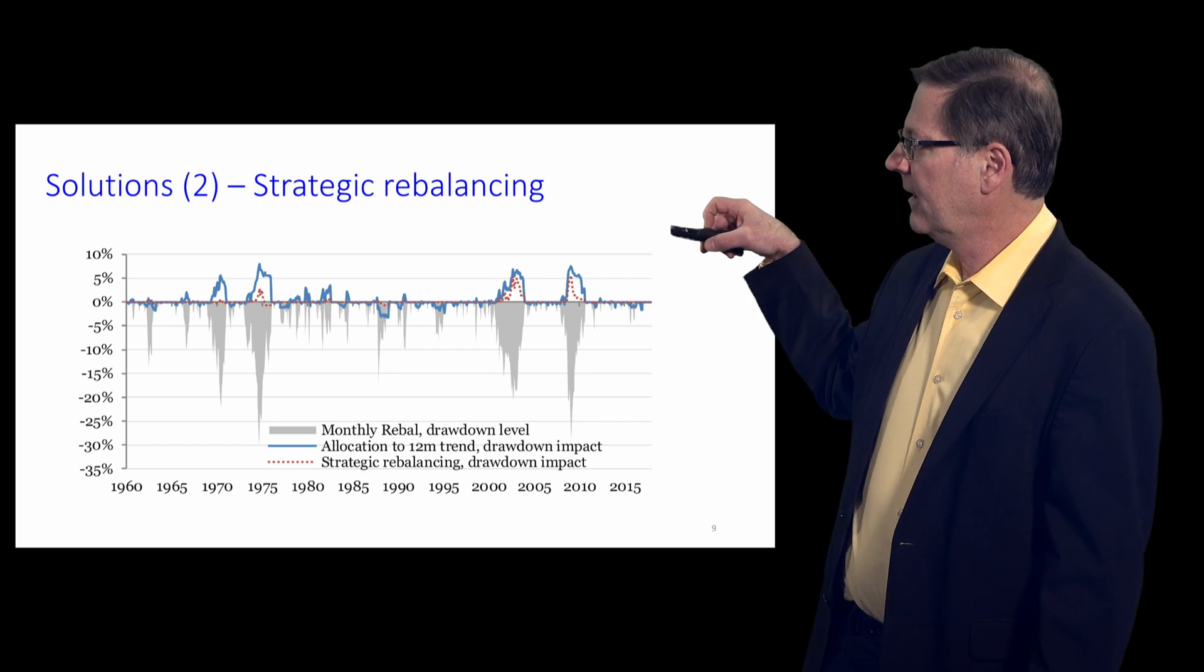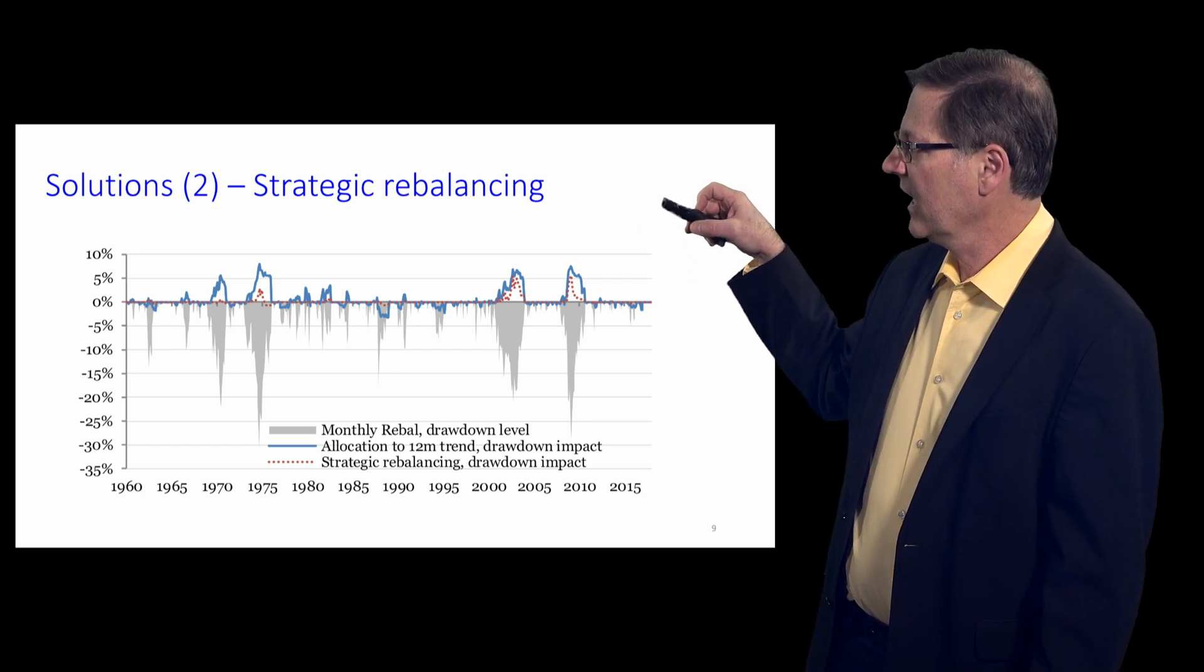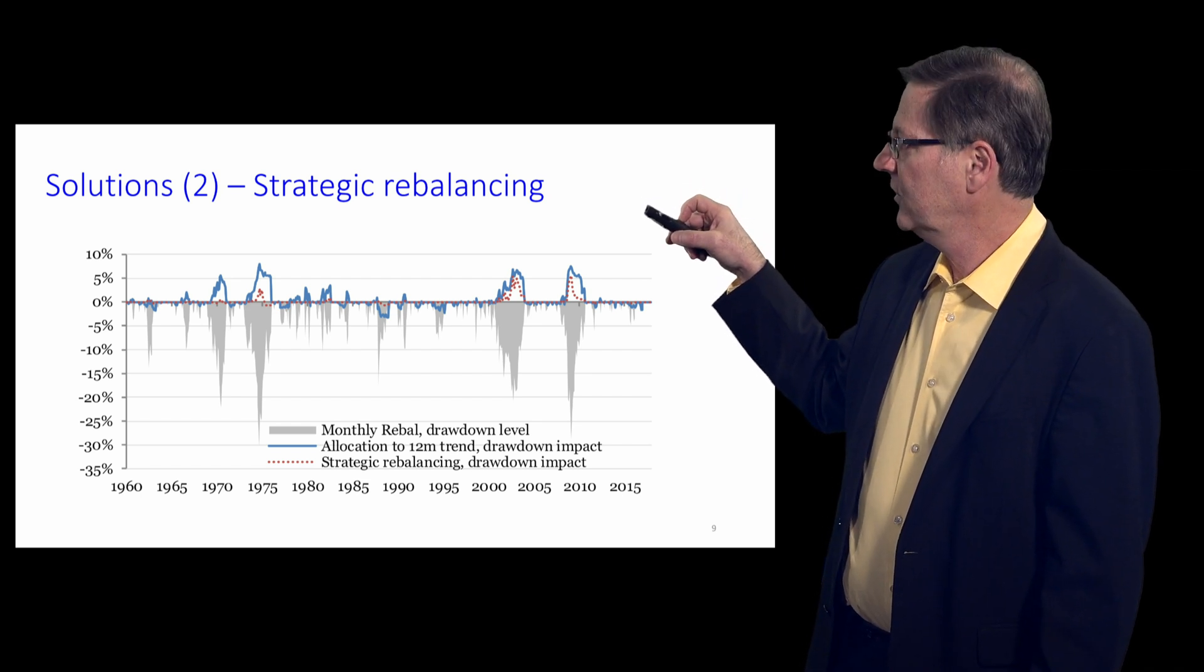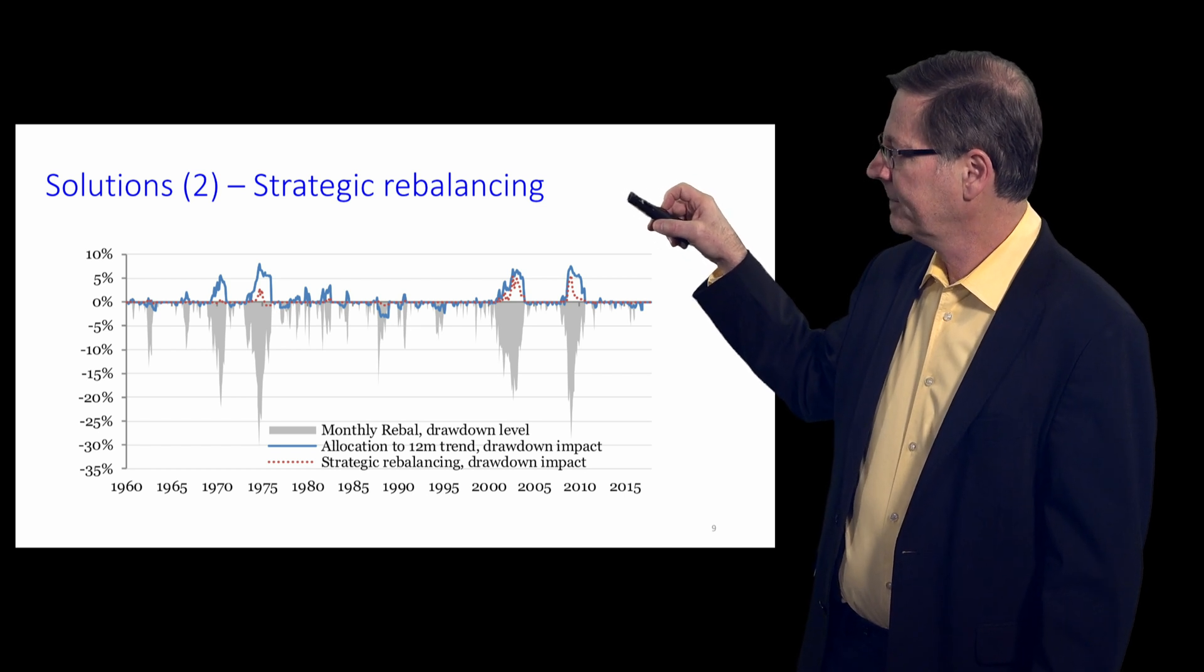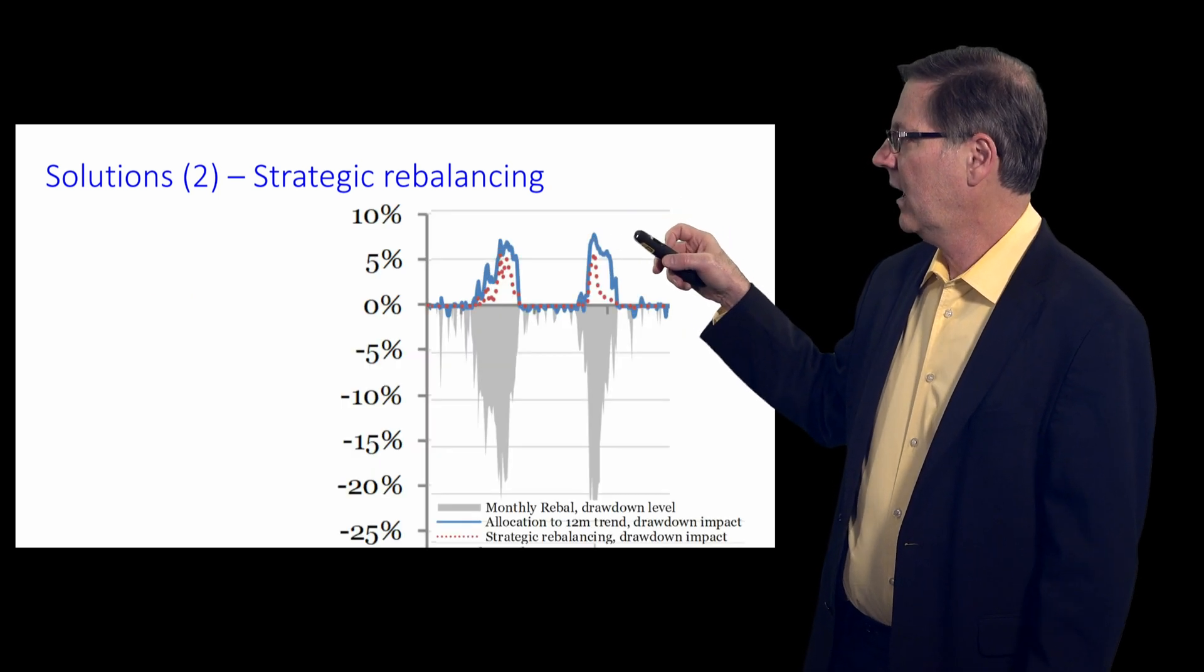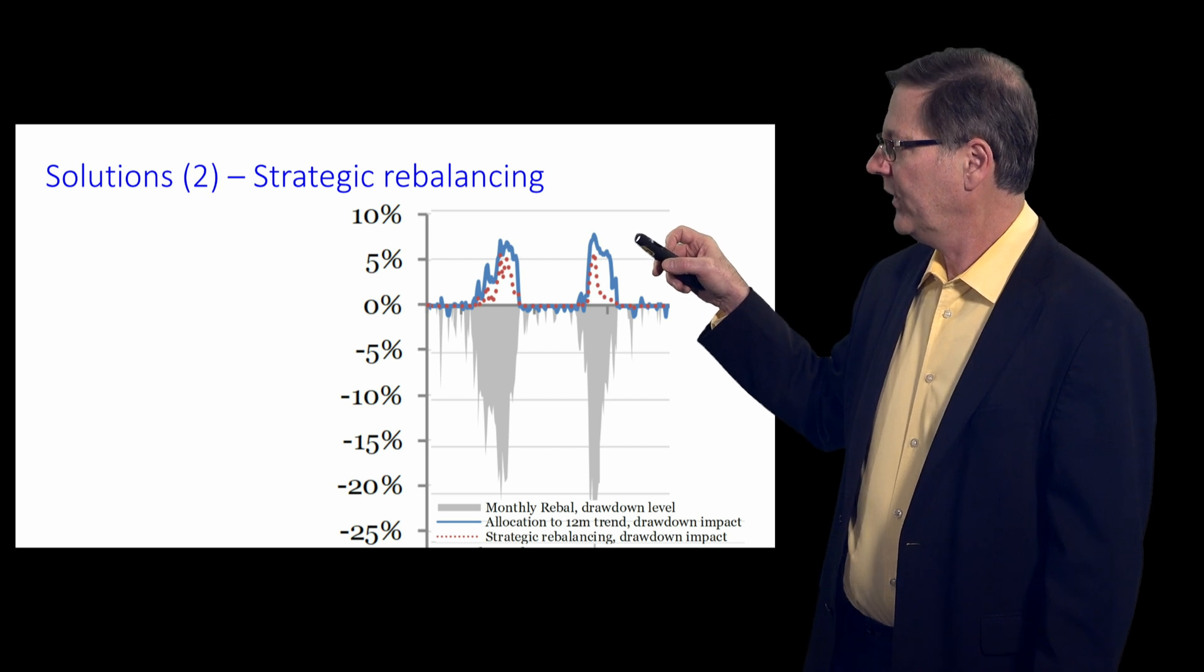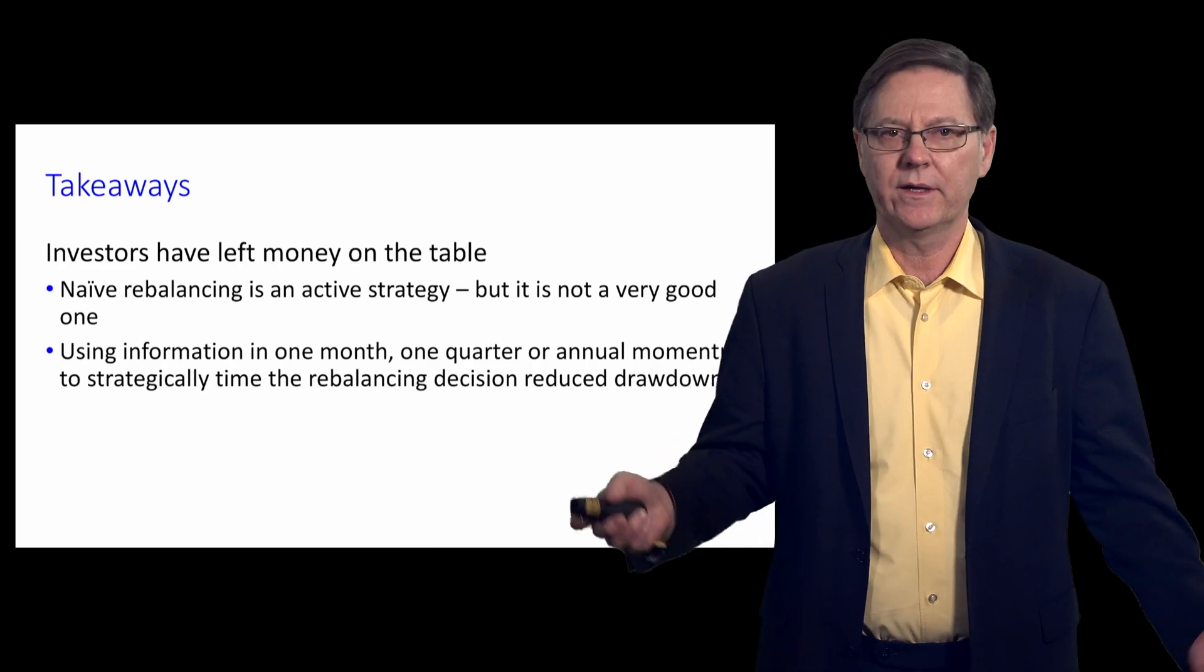You can see above the zero axis, the solid line is the savings induced by the direct allocation to trend systems, and the red dotted line is the strategic rebalancing. In both of the last two episodes of large drawdowns, both of these systems perform quite favorably.